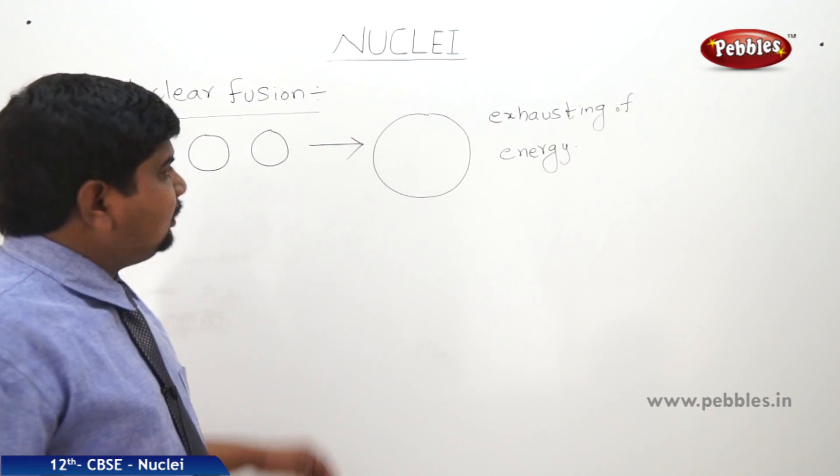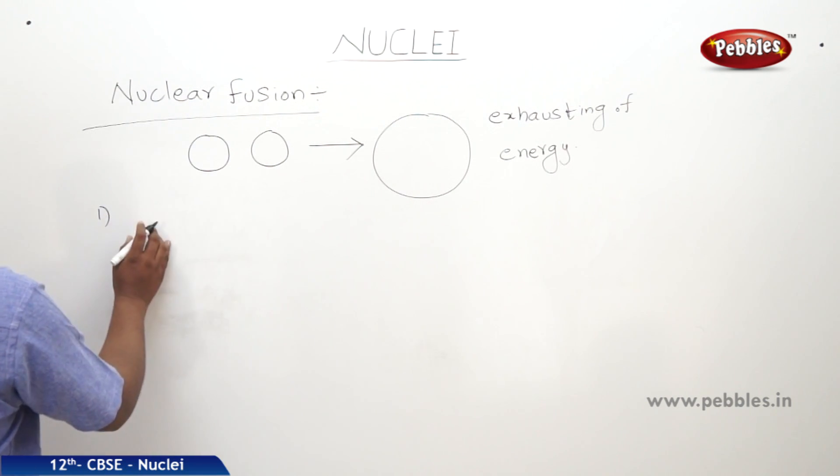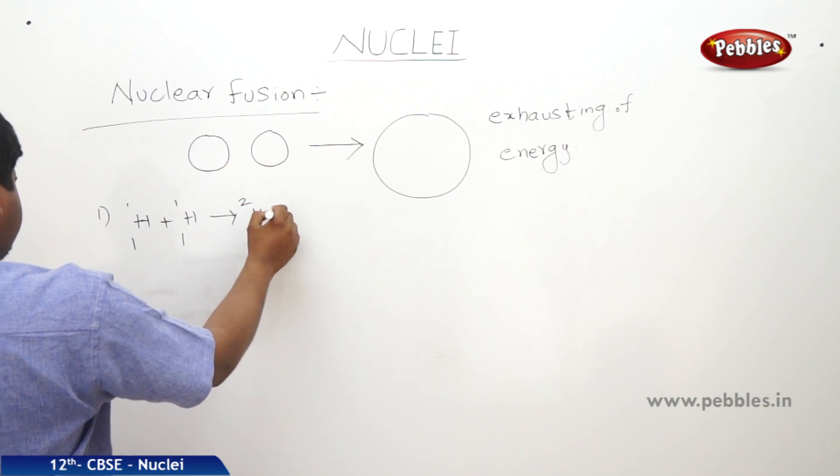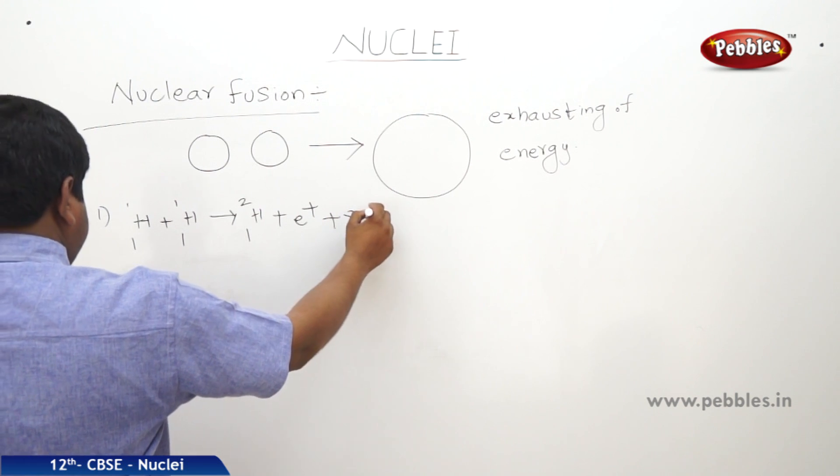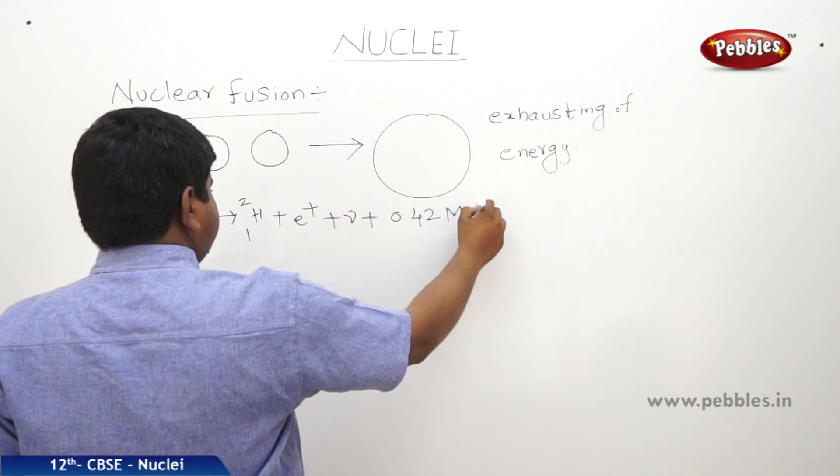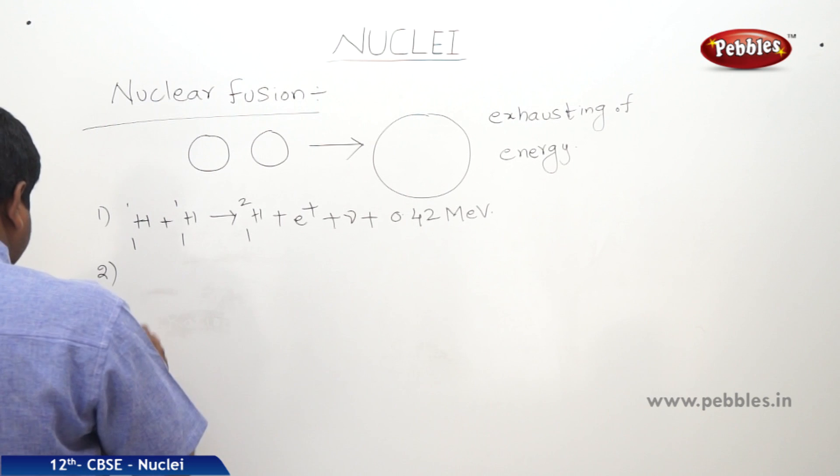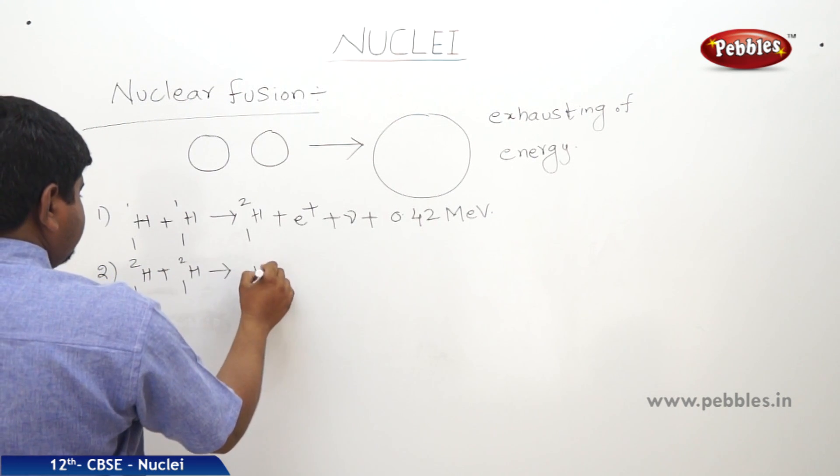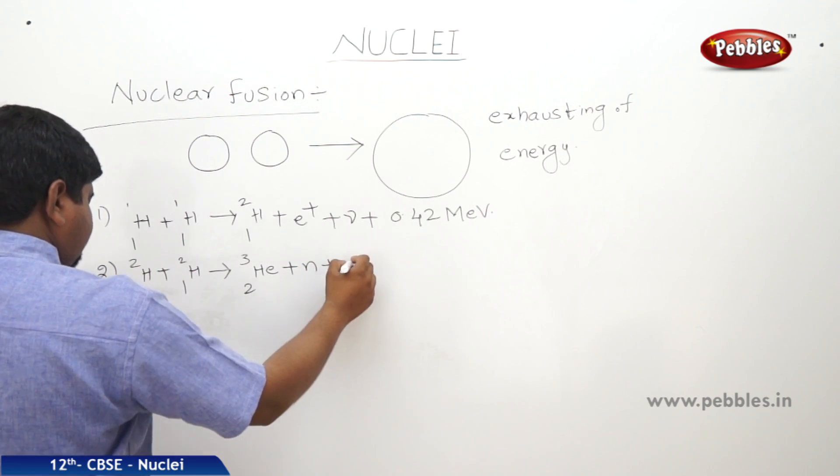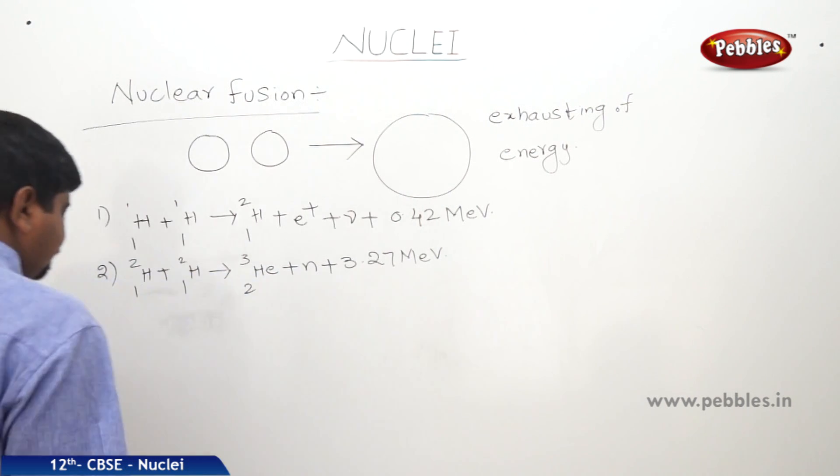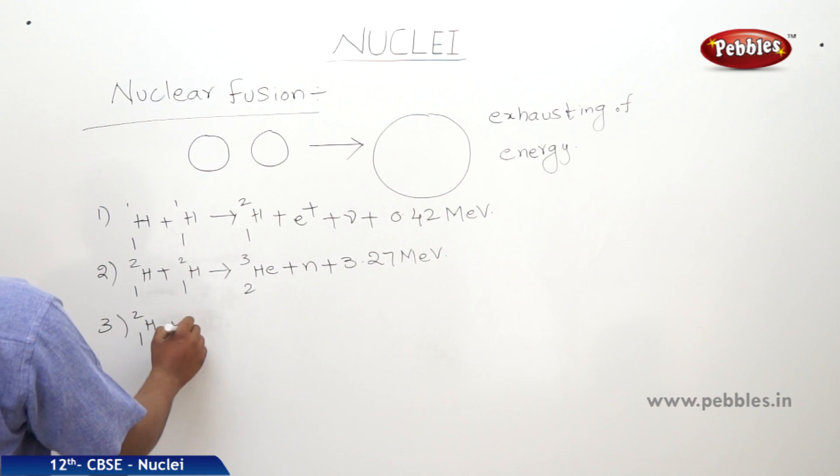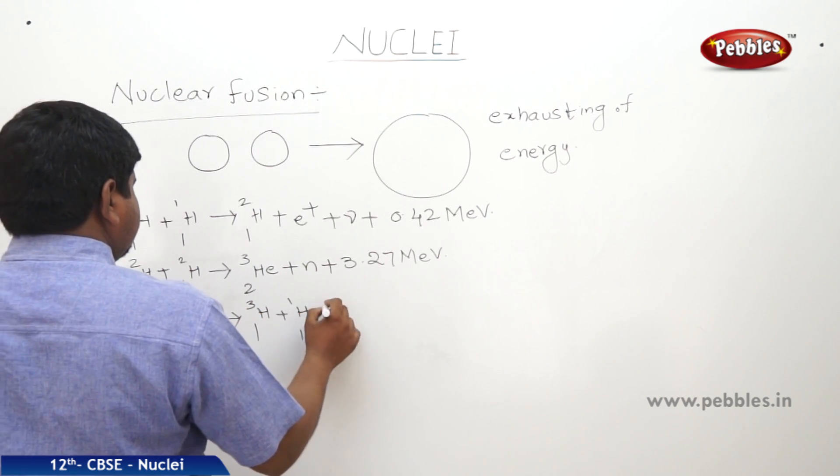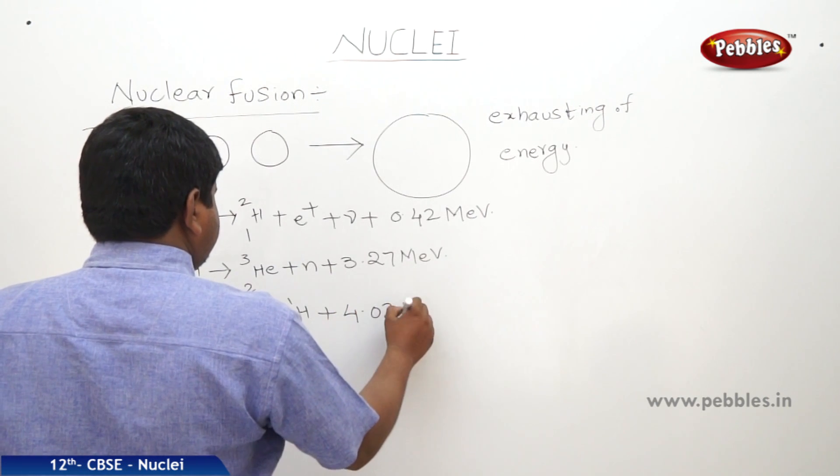Now we will see the examples of nuclear fusion reactions. The first example is like this: 1H1 plus 1H1 gives rise to 1H2 plus E+ plus neutrino plus 0.42 MeV. Next example: 1H2 plus 1H2 gives rise to 2He3 plus 1 neutron plus 3.27 MeV. Next reaction: 1H2 plus 1H2 gives rise to 1H3 plus 1H1 plus 4.03 MeV.